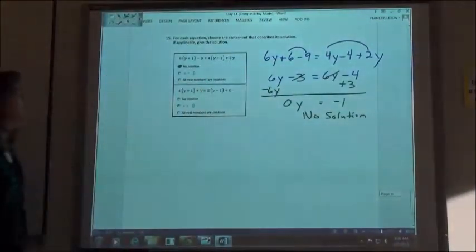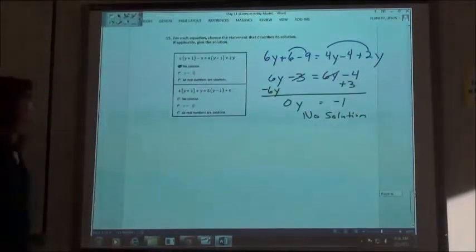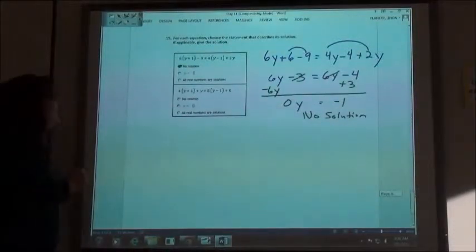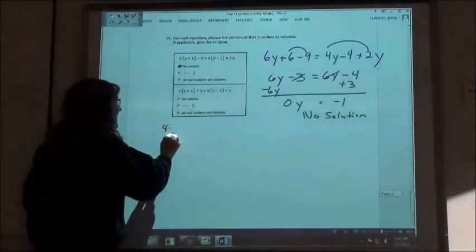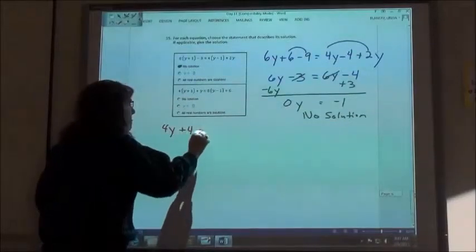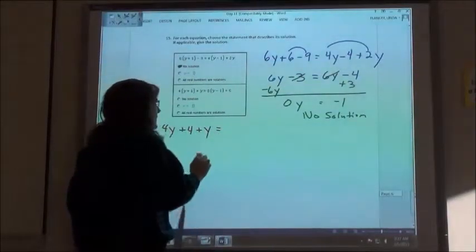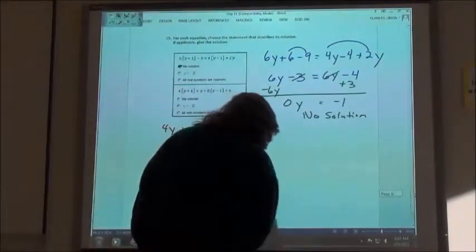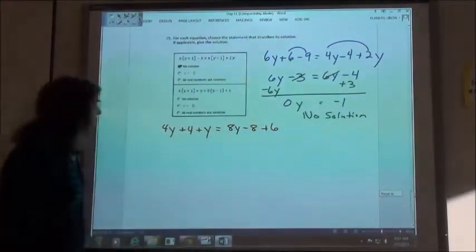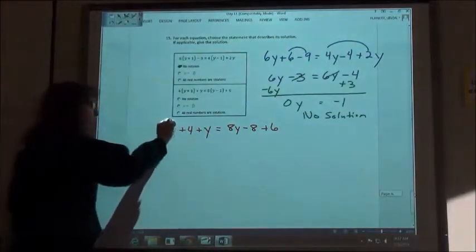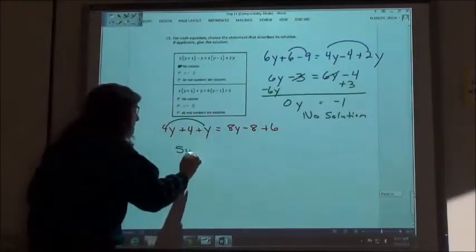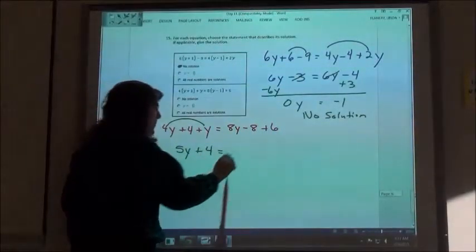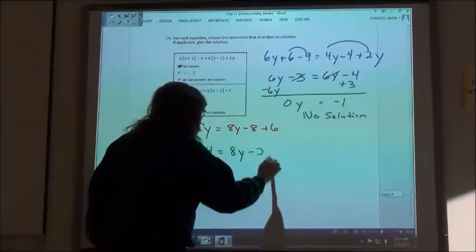All right. Let's do the bottom one. You're doing good on these. Yeah, as long as I'm talking, if I have someone to talk to, I can do it. Okay. 4y plus 4 plus y equals 8y minus 8 plus 6. So 4y, is that the ones? Could that be 5y? Exactly. 5y plus 4 equals 8y minus 2. Okay.